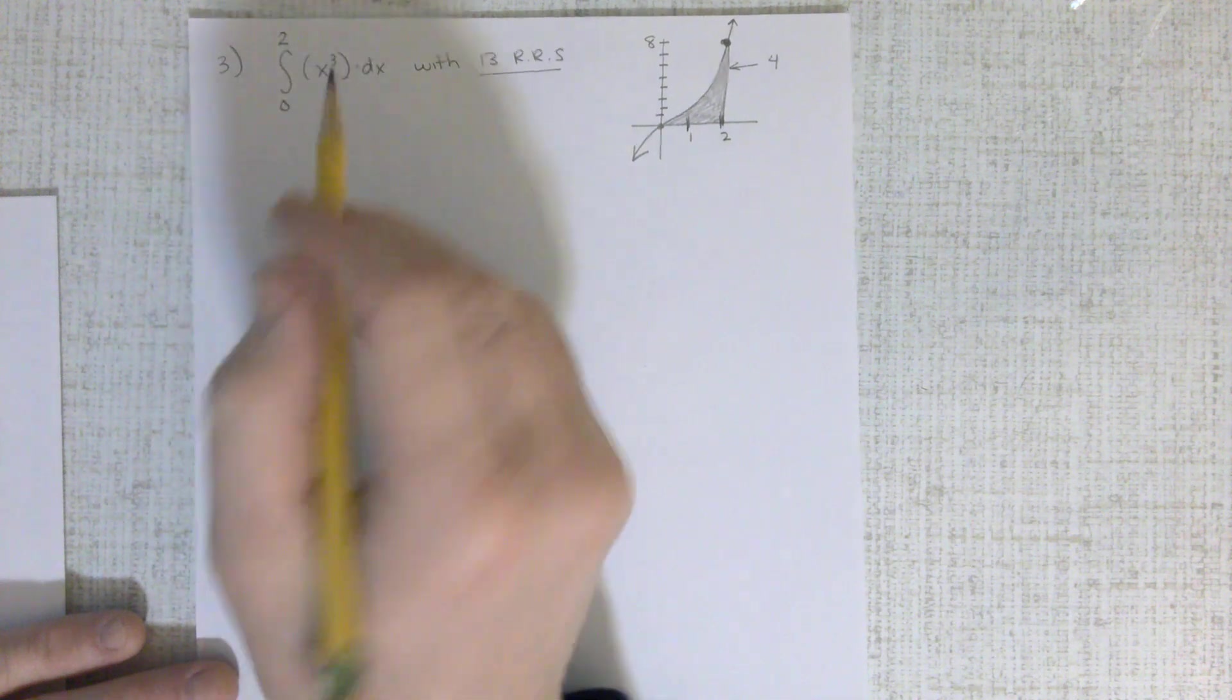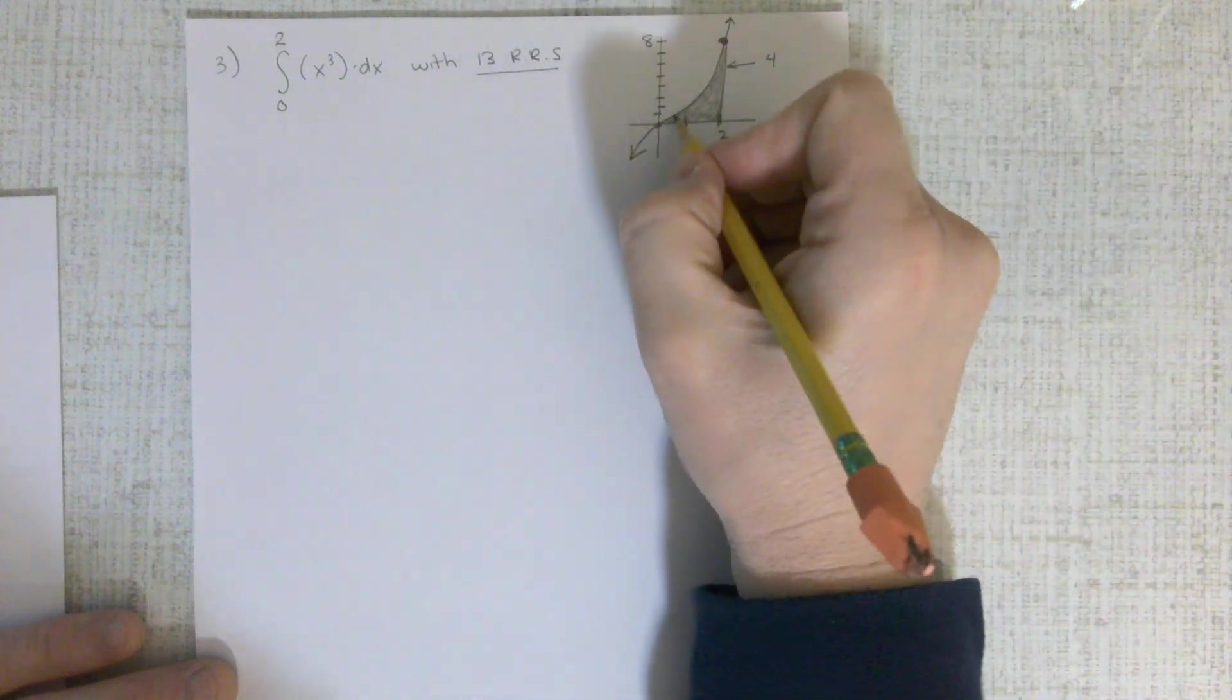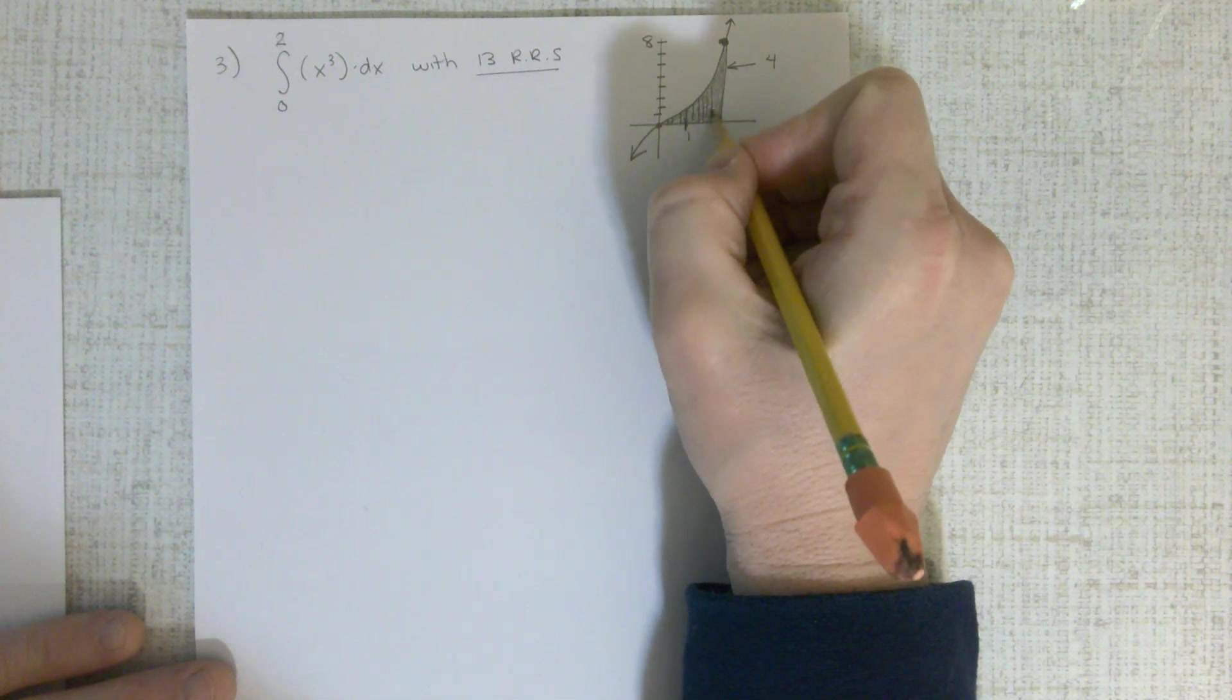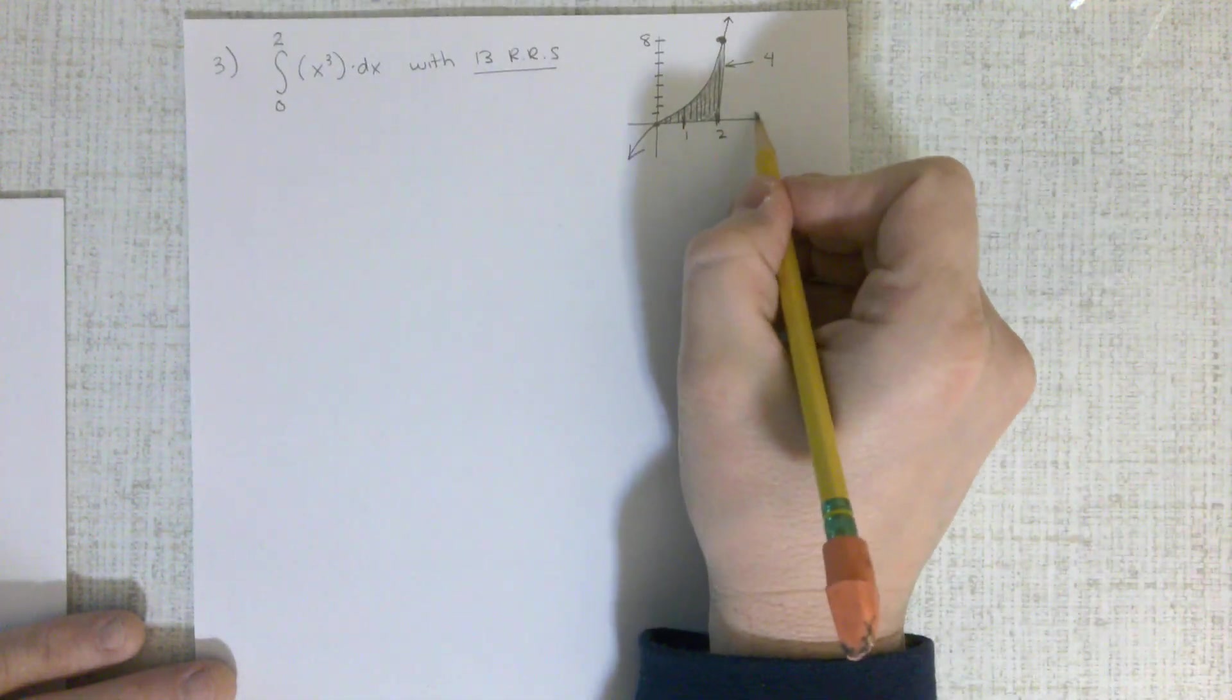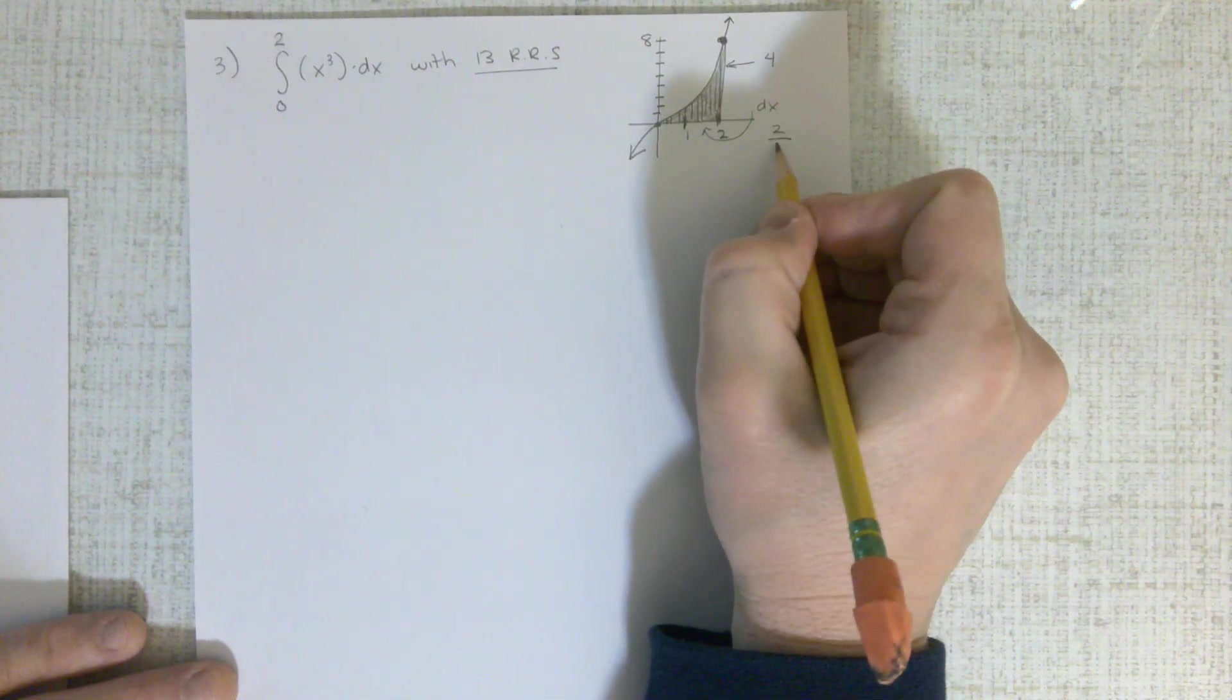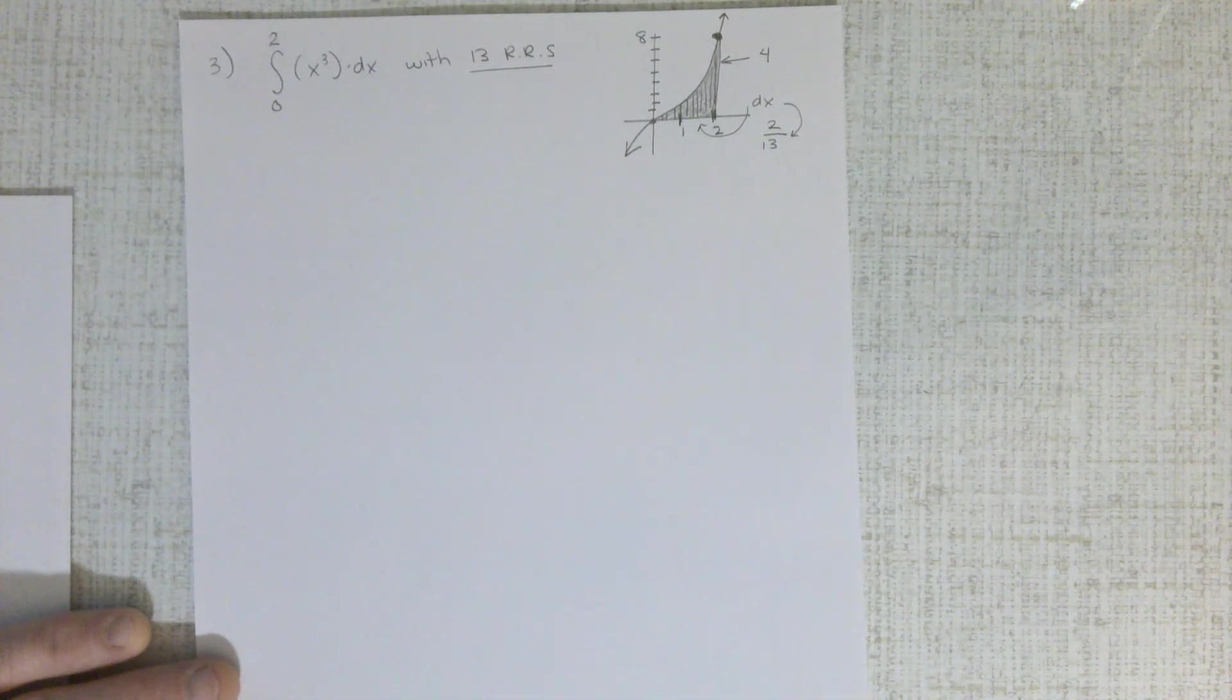The next thing we want to do is identify what this delta x is. And that delta x is the width of every rectangle. So if I were to draw 13 rectangles in here, 1, 2, 3, 4, 5, 6, 7, 8, all the way to 13 rectangles, the width of each rectangle, which is delta x, would be 2 divided by 13. So there's my delta x, and it's going to come in handy later.